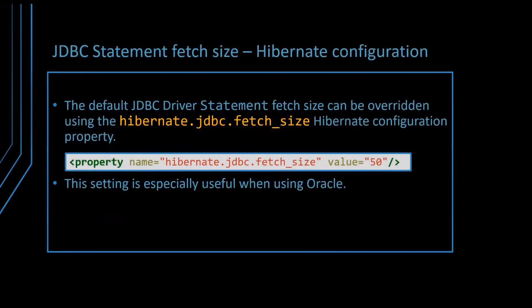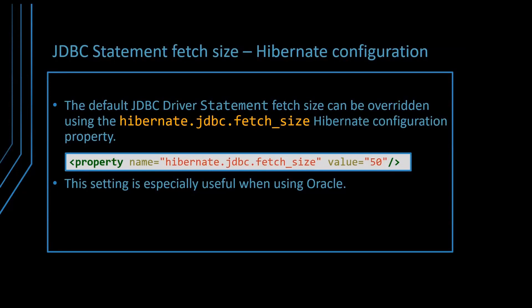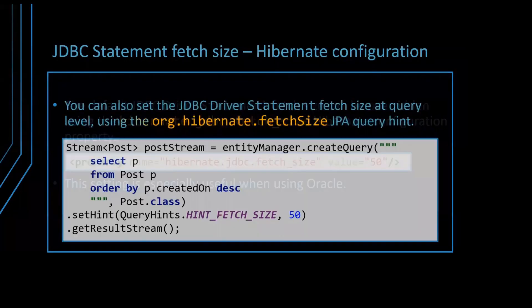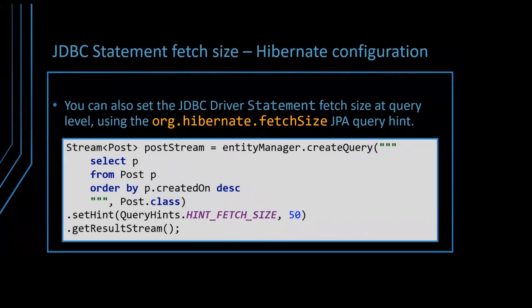If you're using Hibernate, the advantage is there is only one global property that you can set to override the default fetch size. Now, if you're using PostgreSQL, you probably don't want to do that. But for Oracle, it's a good idea to increase the default fetch size from 10 to something larger like 50 or 100. And if you're using streams, you also want to give a custom fetch size on a per-query basis, because for MySQL you don't want to prefetch everything — that can lead to out of memory issues or garbage collection issues.